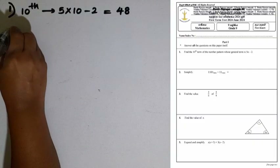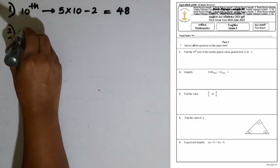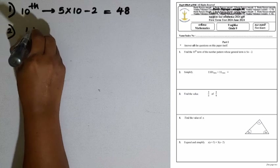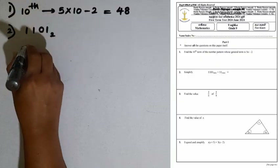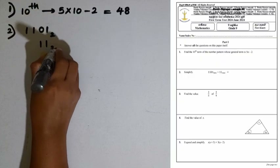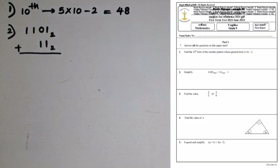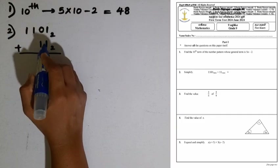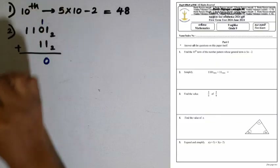Question number 2: we are given the addition of 2 binary numbers: 1101 base 2 plus 112 base 2. We have to add the 2 binary numbers. When adding 1 and 1, we get 10 — keep 0 here and carry 1 to the next column.